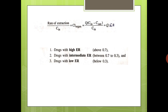The extraction ratio ranges from 0 (not extracted at all) to 1 (highly extracted). Drugs above 0.7 are considered highly extracted; between 0.3 and 0.7 is intermediate; below 0.3 indicates a low extraction ratio. This is analogous to t½: a lower t½ means faster elimination; similarly, a higher ER means the drug is eliminated more rapidly.